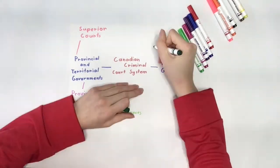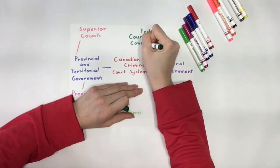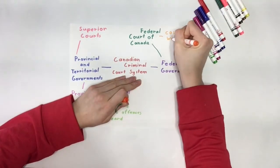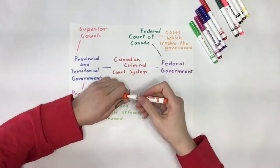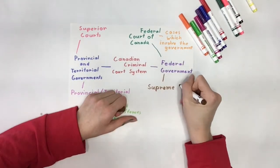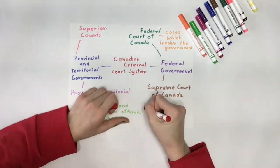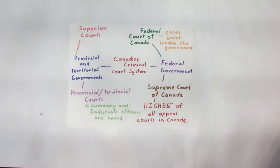The federal court system consists of the Federal Court of Canada and the Supreme Court of Canada. The Federal Court of Canada manages cases which involve the government, with both a trial and appeal decision. The Supreme Court of Canada is the highest of all appeal courts in Canada. An appeal is a request that a higher court reviews the decision of a lower court. This is the furthest an appeal can go, since there is no higher court than the Supreme Court in Canada.